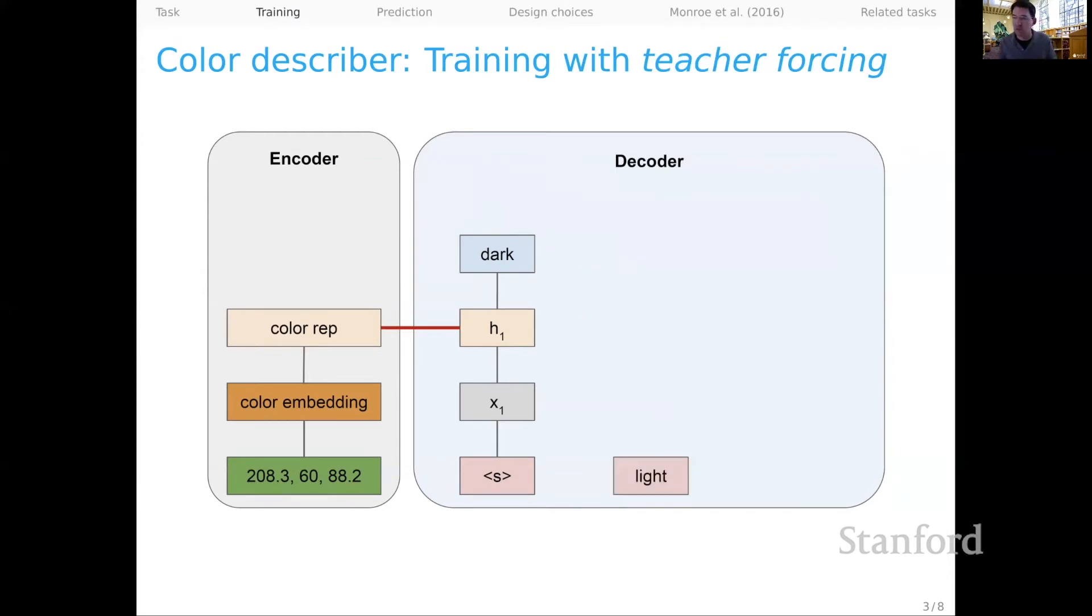And then we begin with the next time step. I've called this teacher forcing because in the standard mode, which is the teacher forcing mode, even though we predicted dark at time step one, we're going to have as our second token the token light, which is the actual token in the underlying training data. When we proceed as though we did not make a mistake. So again, we do an embedding lookup.